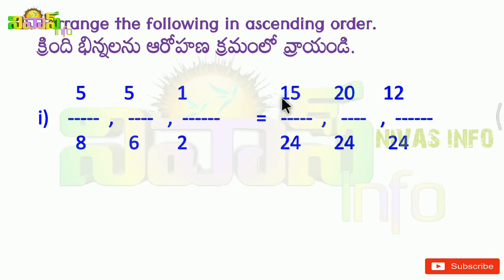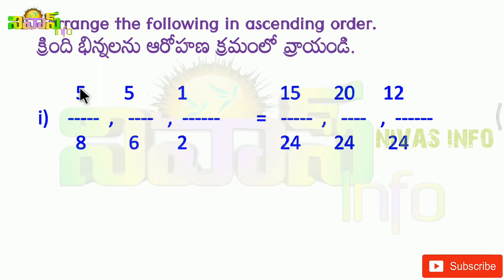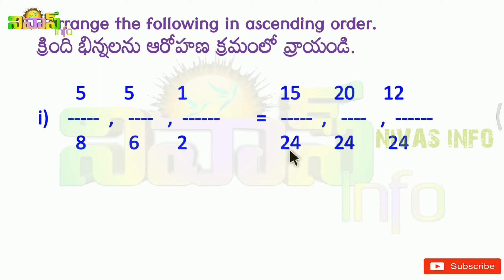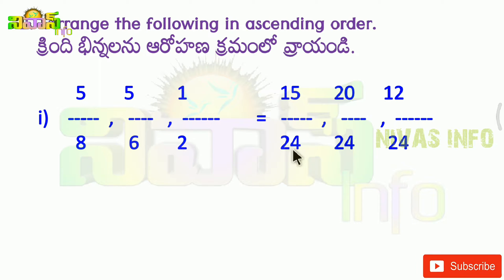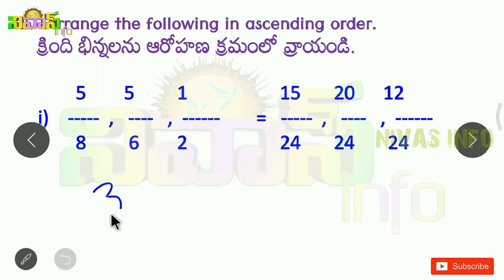First, we have to make the numerators. The denominator is 24. We have to show the first fraction. There is 5 by 8. In this 5 by 8, the denominator is 8. Here is 24. We check the 8 table: 8, 16, 24 — so 8 times 3 is 24. The number we multiply is 3.